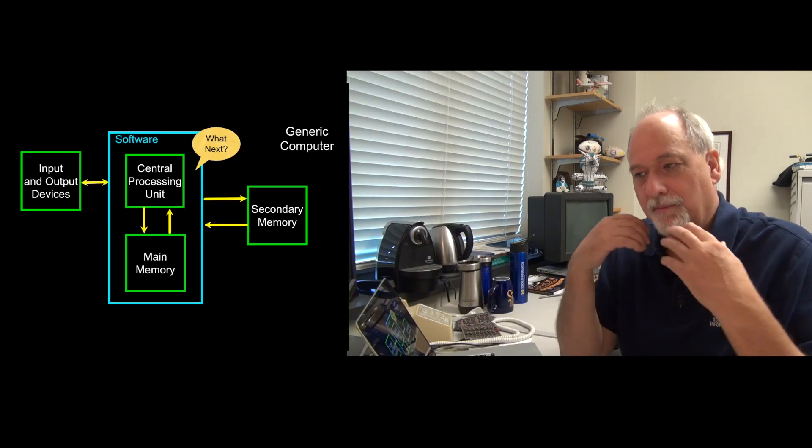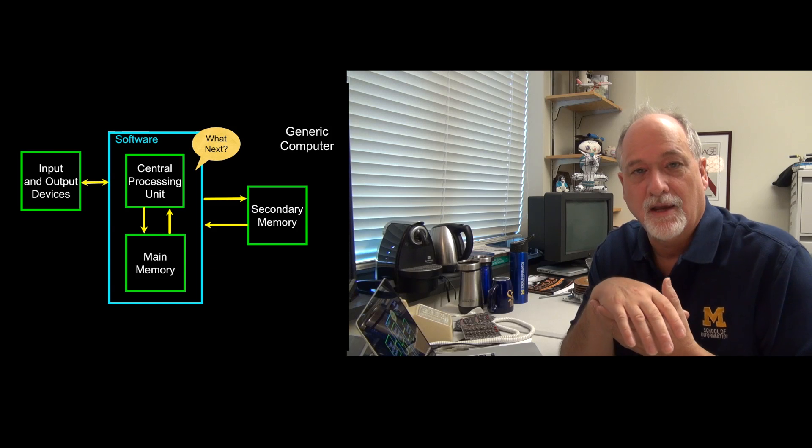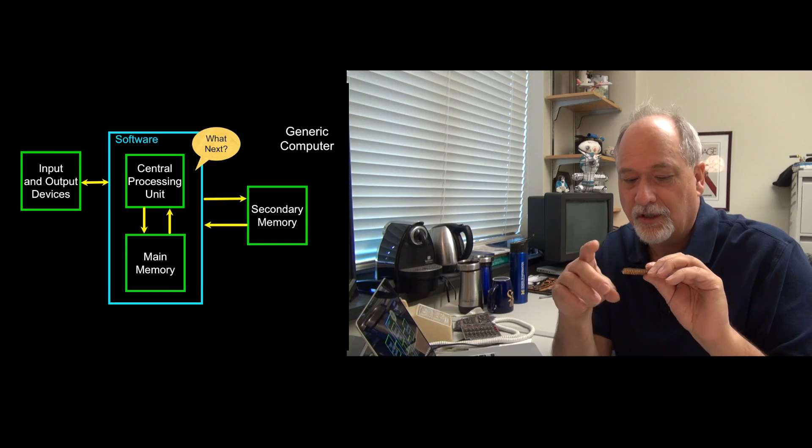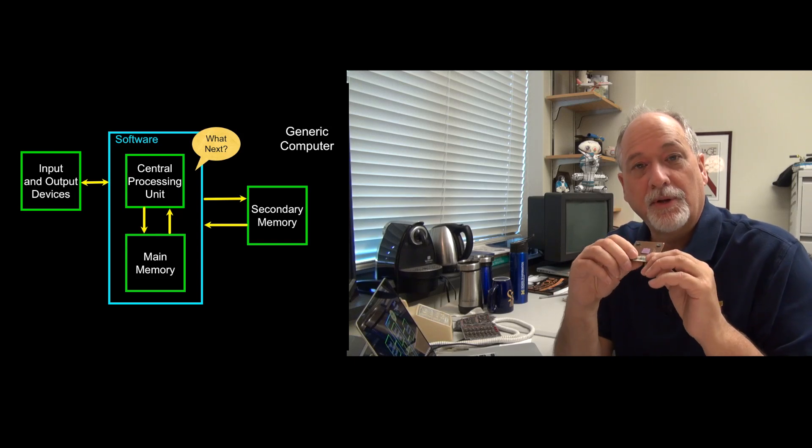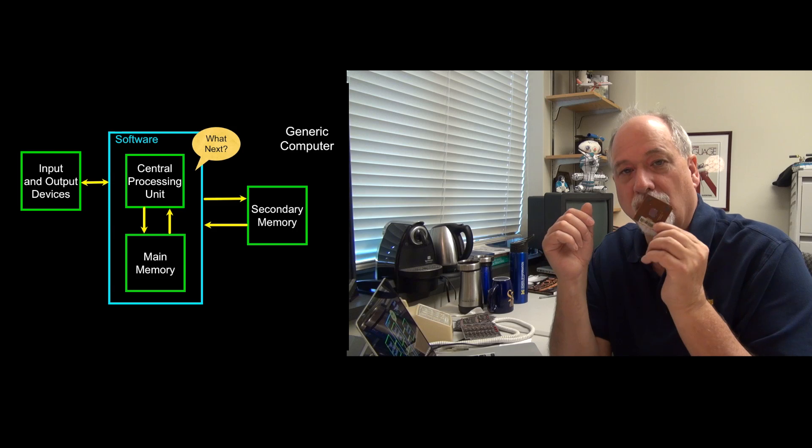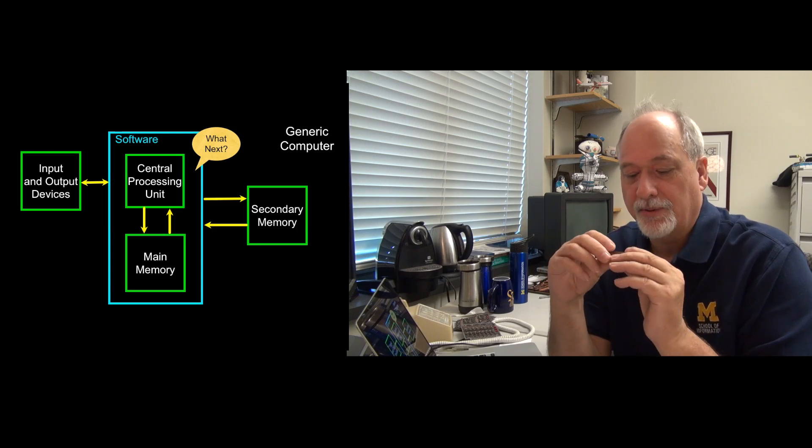And so the basic block diagram is that the brains, if there are brains in computers, which there really aren't, the software is the closest thing computers have to brains. But in hardware, the closest brain a computer has is this, called a microprocessing unit or a central processor unit.